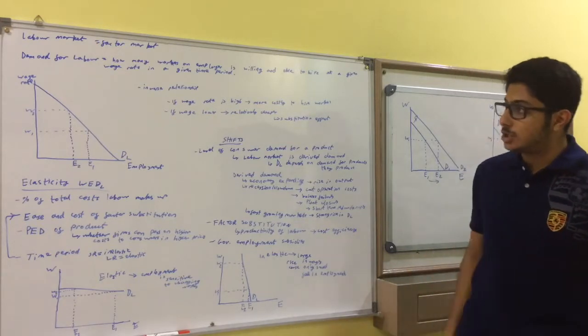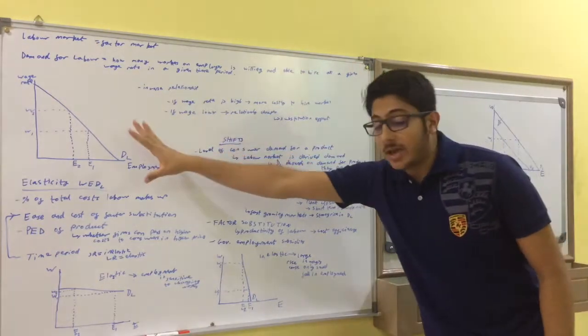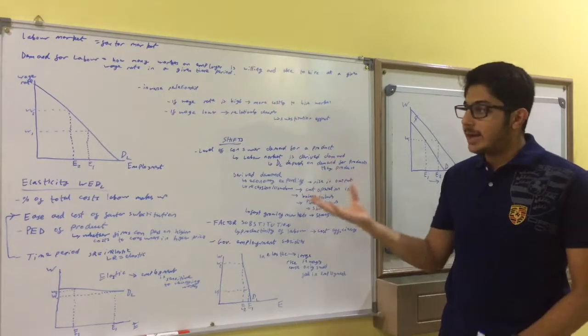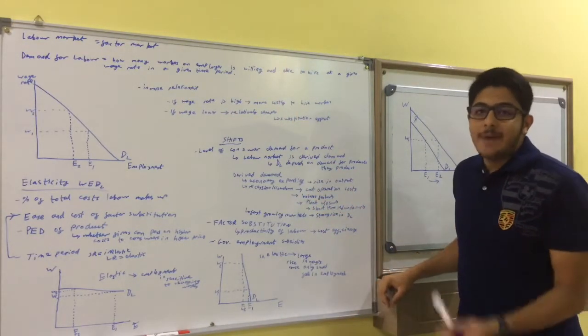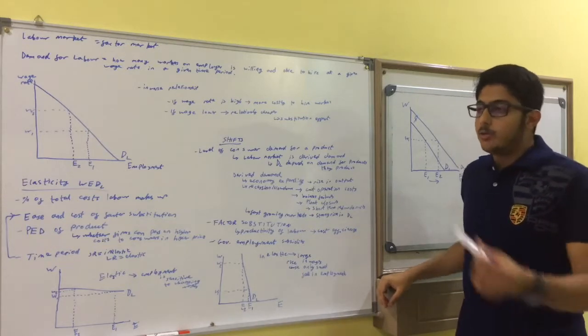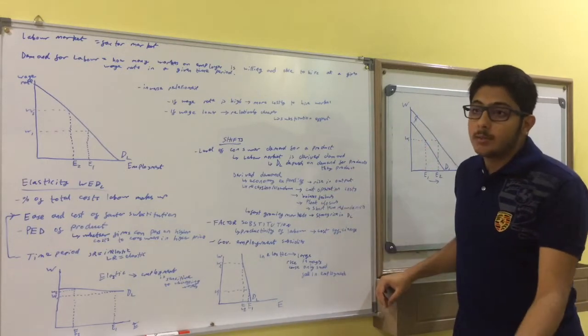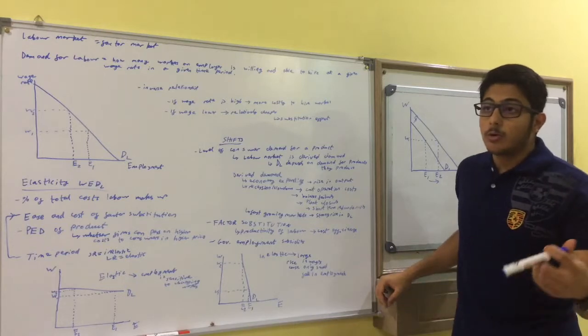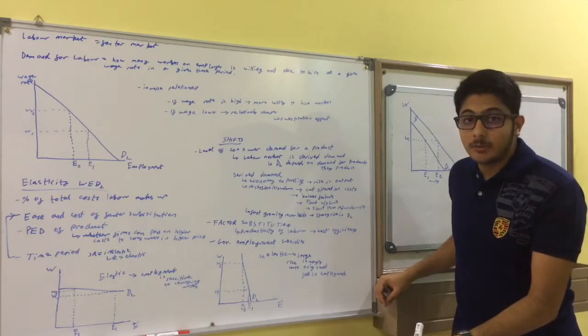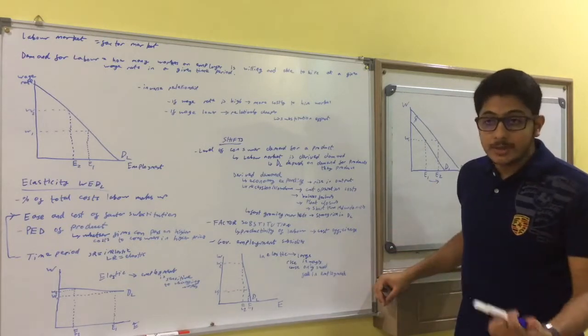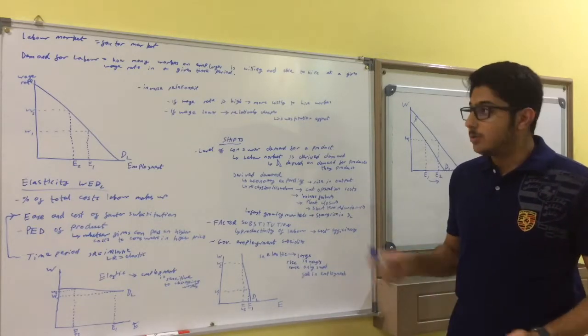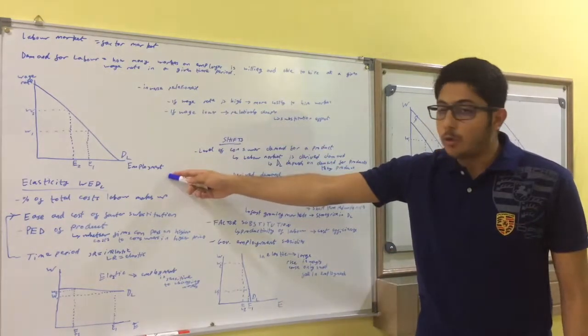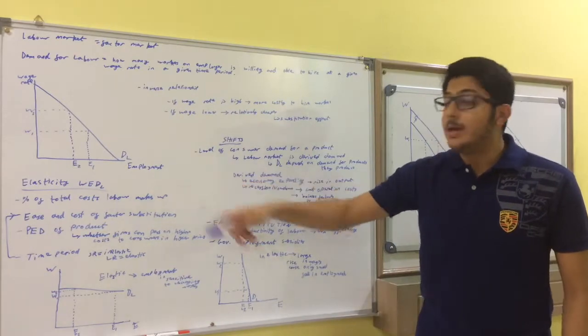Because it's a factor of production, these diagrams do not show us demand or supply for goods or services. They show us demand and supply for labor. So, how employers want to hire workers or reduce the number of workers they employ depending on the wage rate, or how workers offer their labor services in return. It shows us how the wage rate and employment of labor interact.